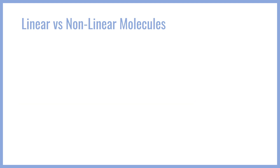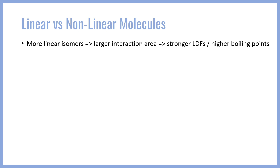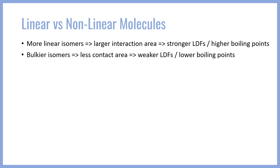We can see very tangible impacts of this phenomenon if we look at some example molecules. From our geometric understanding, we would expect linear molecules, which are similar to our plates, to have a larger interaction area, and therefore have stronger LDFs and higher boiling points. This is because boiling point correlates directly with intermolecular force strength, and if the molecules are non-polar, LDFs are really the only forces to consider. Bulkier or non-linear molecules, on the other hand, will have less contact area — more like our spheres — and we would ultimately expect lower boiling points.